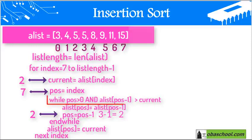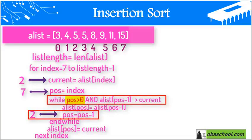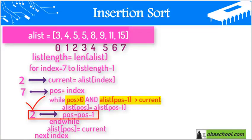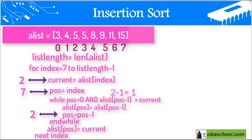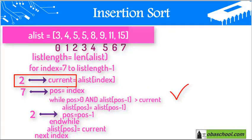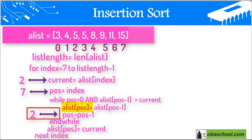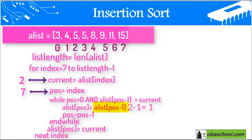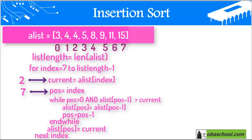We re-enter the while loop. While 2 is greater than 0 — this condition is true. And a list at pose minus 1 is 2 minus 1, which is index 1. The value found on index 1 is 4. Is 4 greater than the current, which is still 2? This condition is true, so we enter the while loop and change the position. We put at index 2 the value found at index 1, which is 4. Then we change pose to pose minus 1, which is 2 minus 1 equals 1.